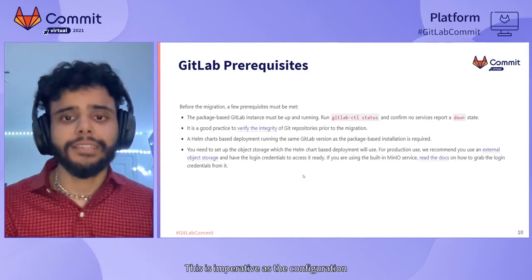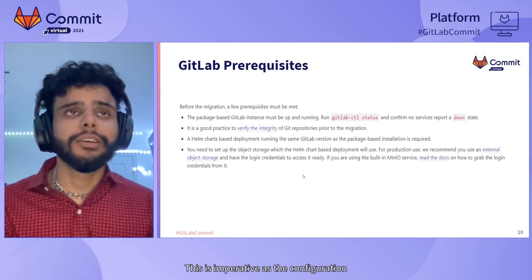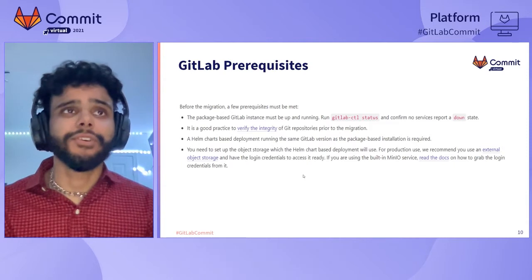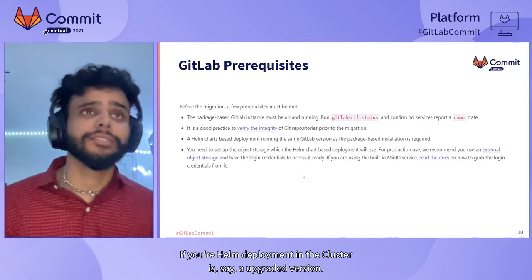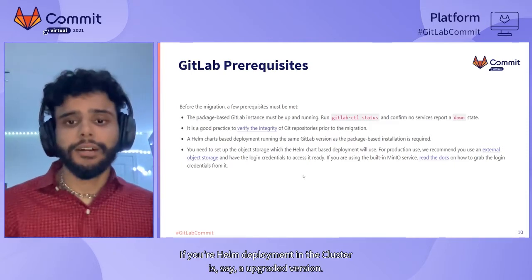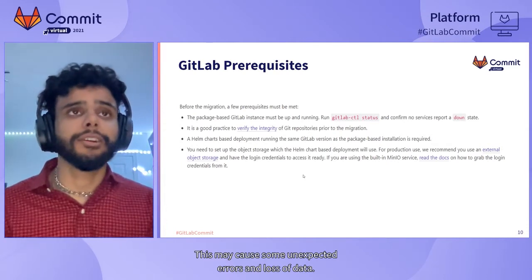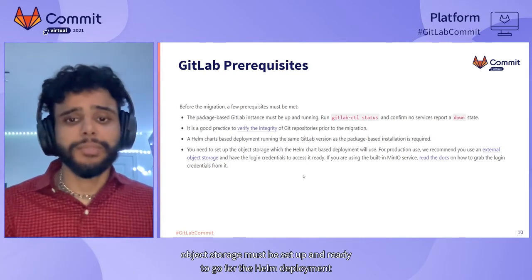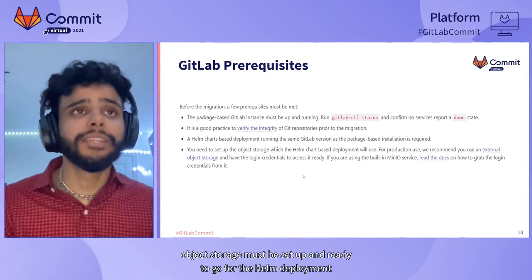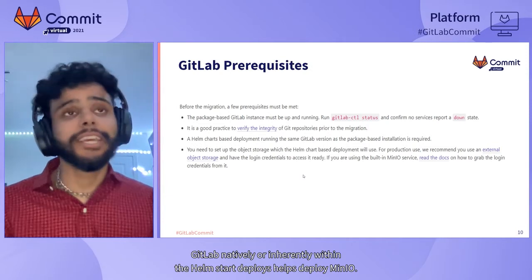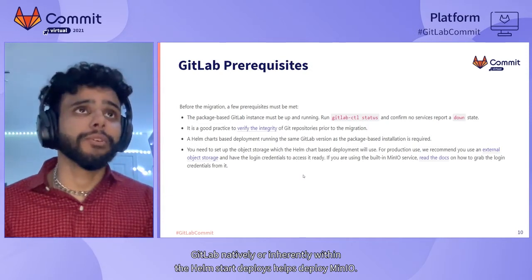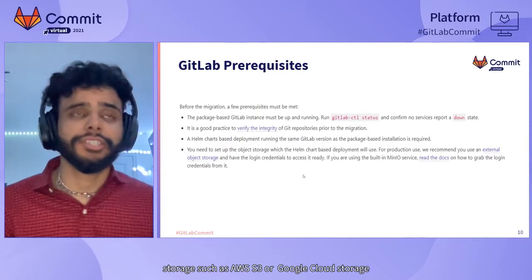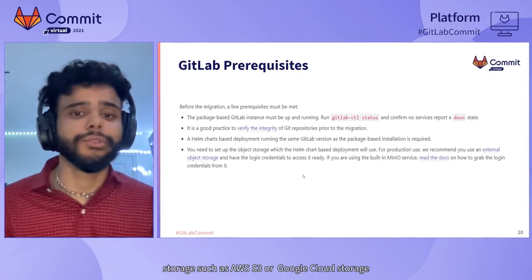This is imperative, as the configuration between the two as well as the one-to-one transfer will differ if your Helm deployment is, say, an upgraded version — this may cause unexpected errors and loss of data. Additionally, object storage must be set up and ready to go for the Helm deployment. GitLab natively within the Helm chart helps deploy MinIO; however, you can use any external object storage such as AWS S3 or Google Cloud Storage.